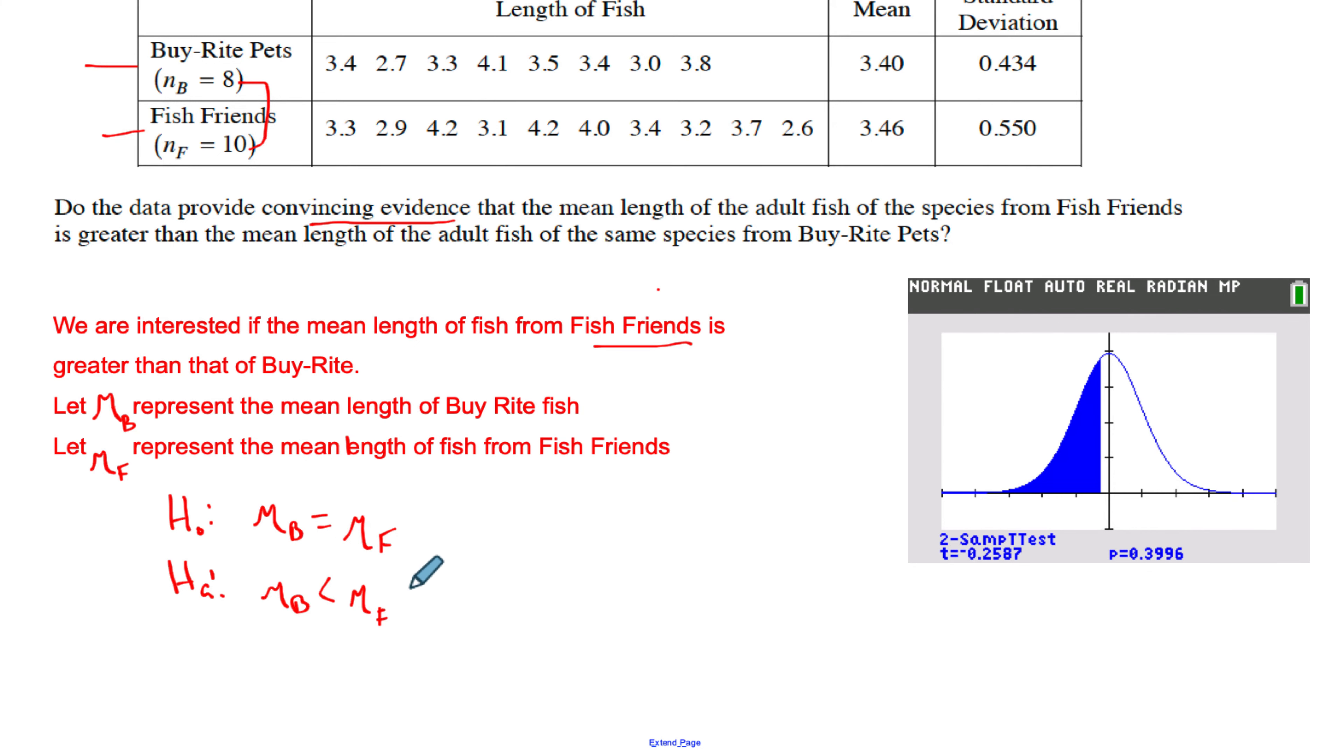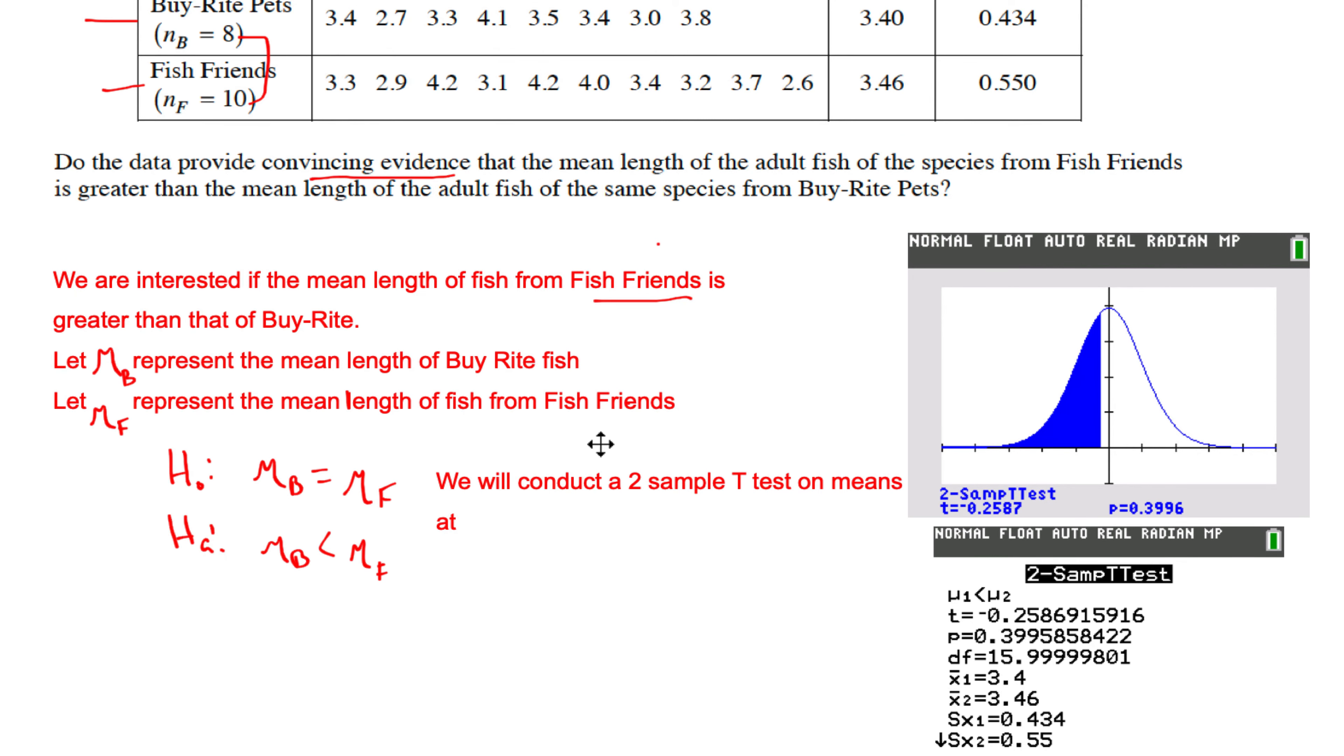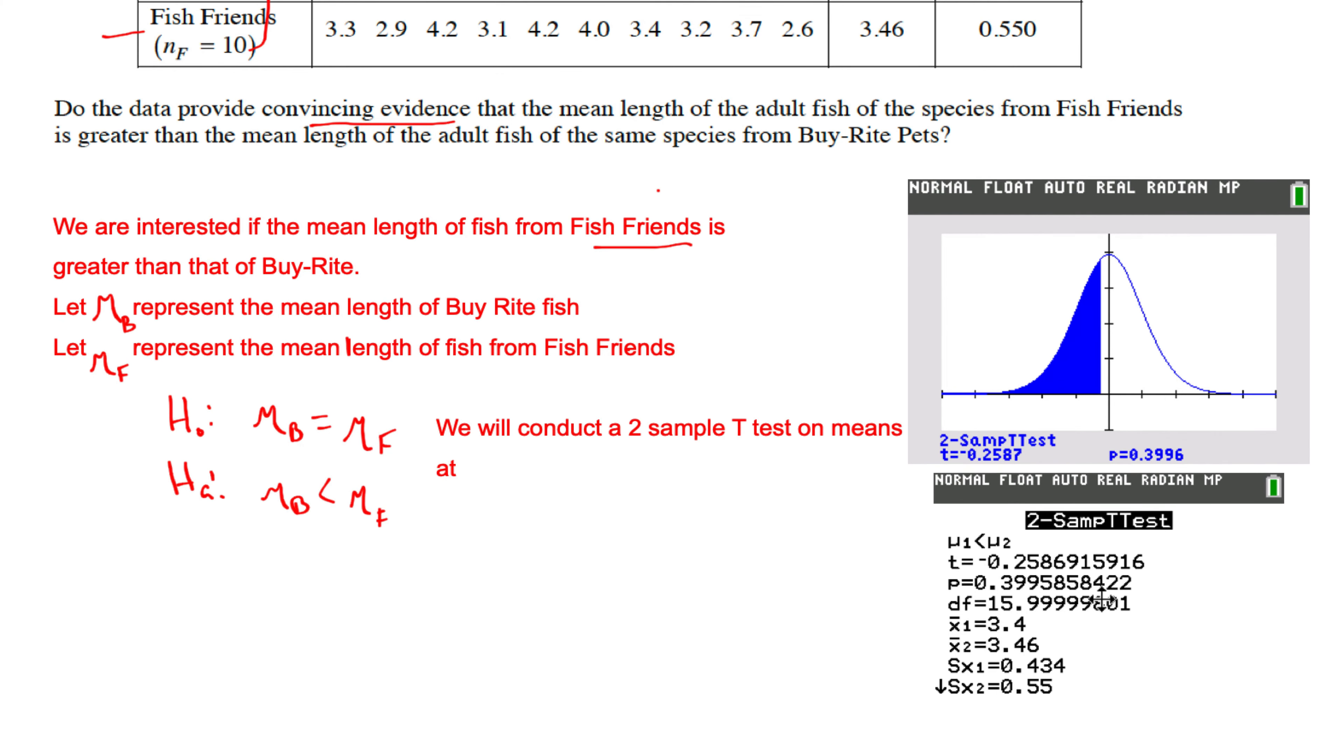We will test at alpha equals 0.05. We need our degrees of freedom because we want to label our t-distribution, and we probably need to say we're going to do this at 0.05. What else do we need?